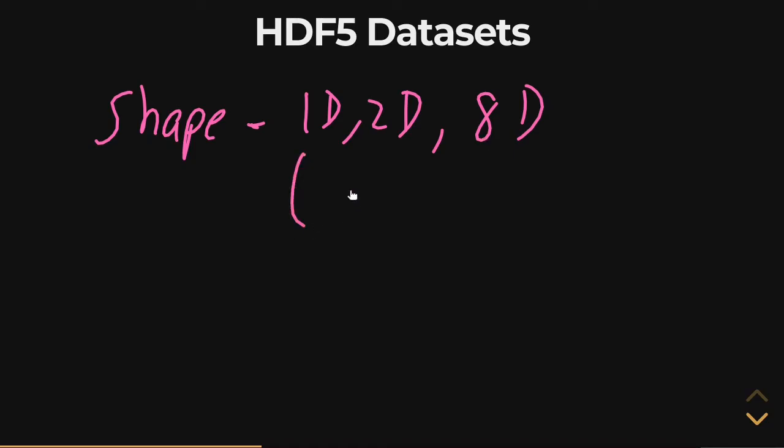You have to specify something like: dimension one has 800 elements, dimension two has 1,200 elements, dimension three has 500 elements. So you're now declaring a three-dimensional dataset, a three-dimensional array that is the shape of the dataset.